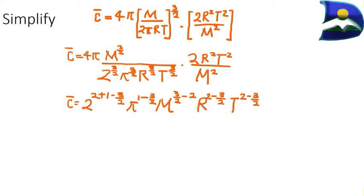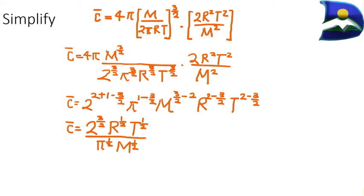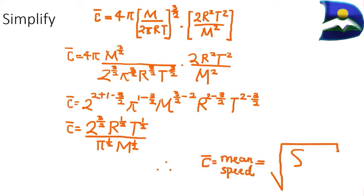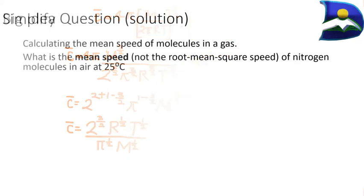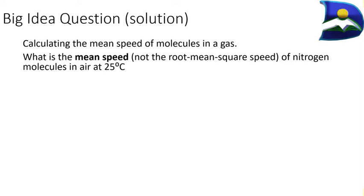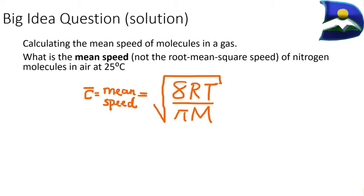After evaluating and simplifying the exponents and collecting like terms, we arrive at the mean speed expressed as a fraction under a square root. Taking the root gives us the final result: mean speed equals the square root of (8RT/πM). This is the ideal mean speed formula applicable to any ideal gas at any temperature.